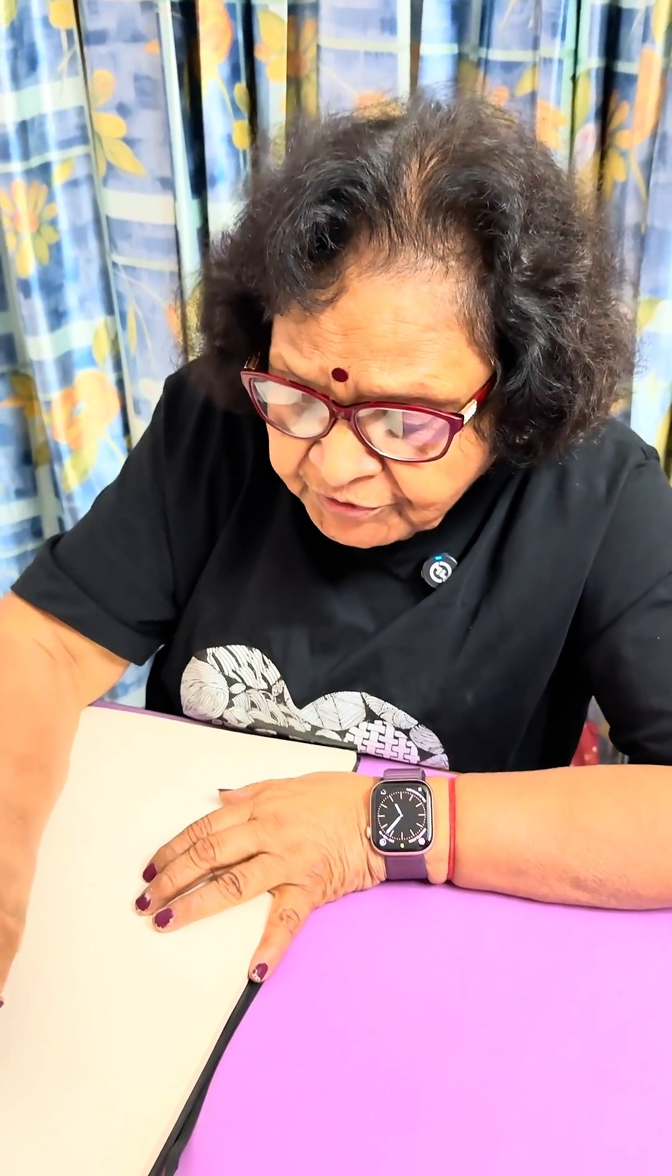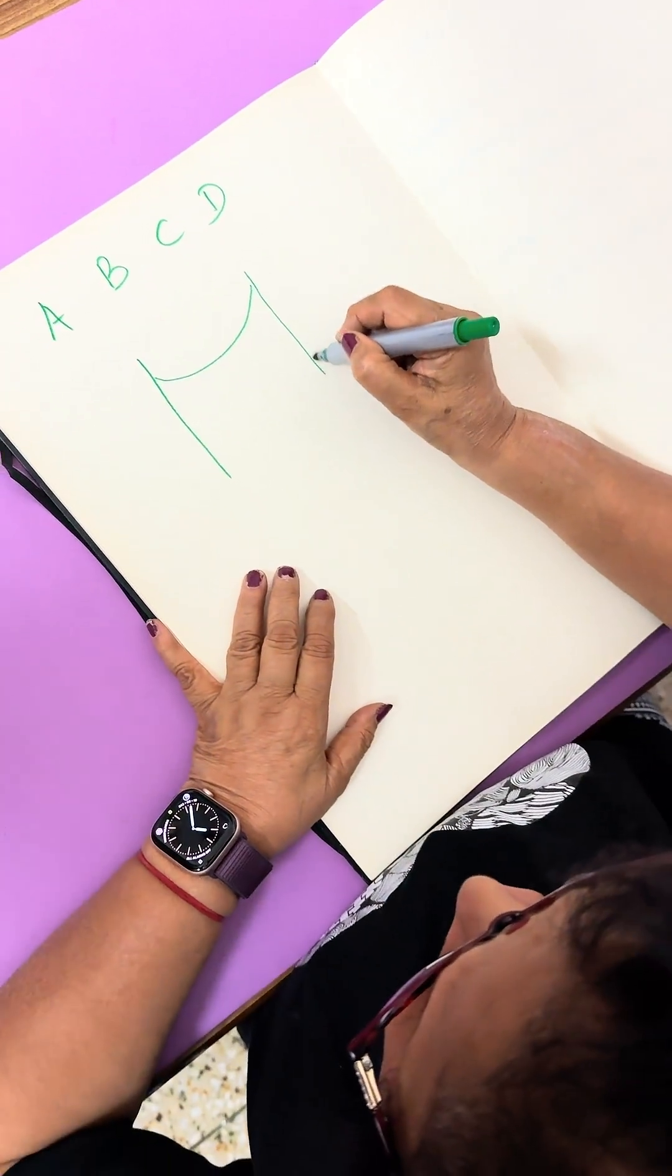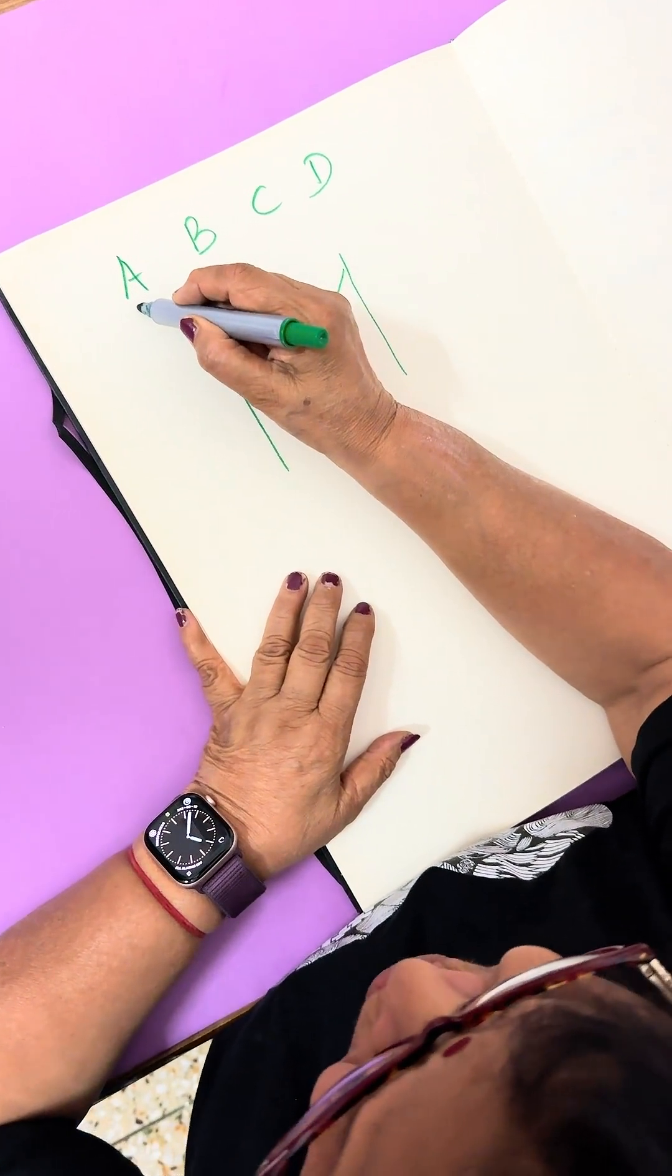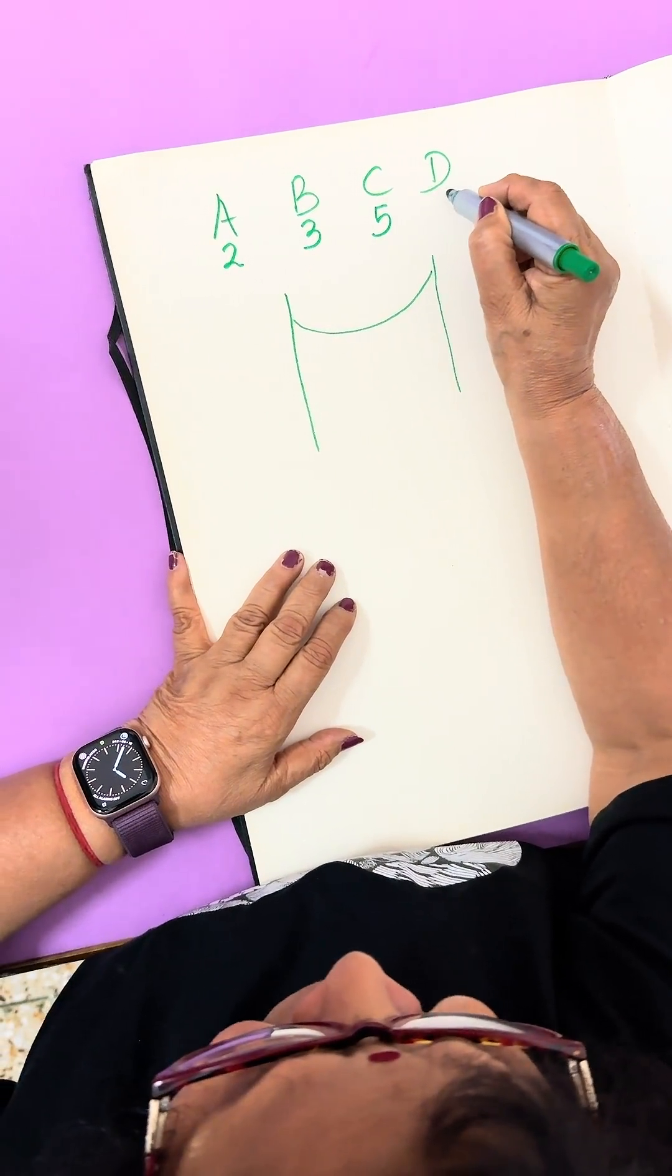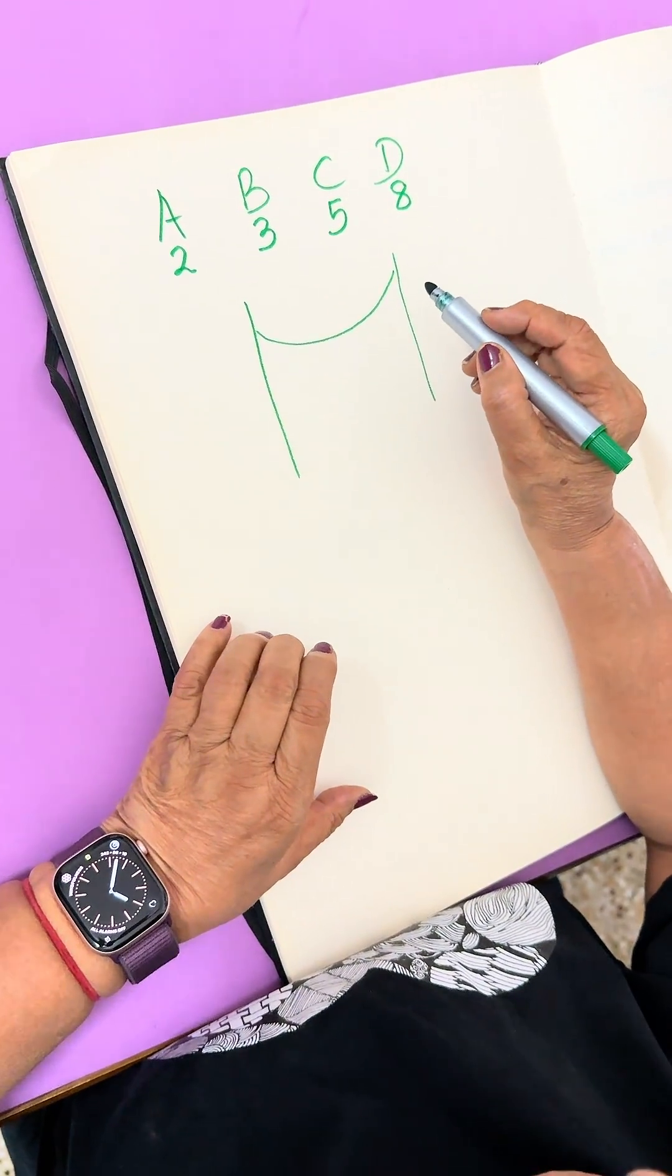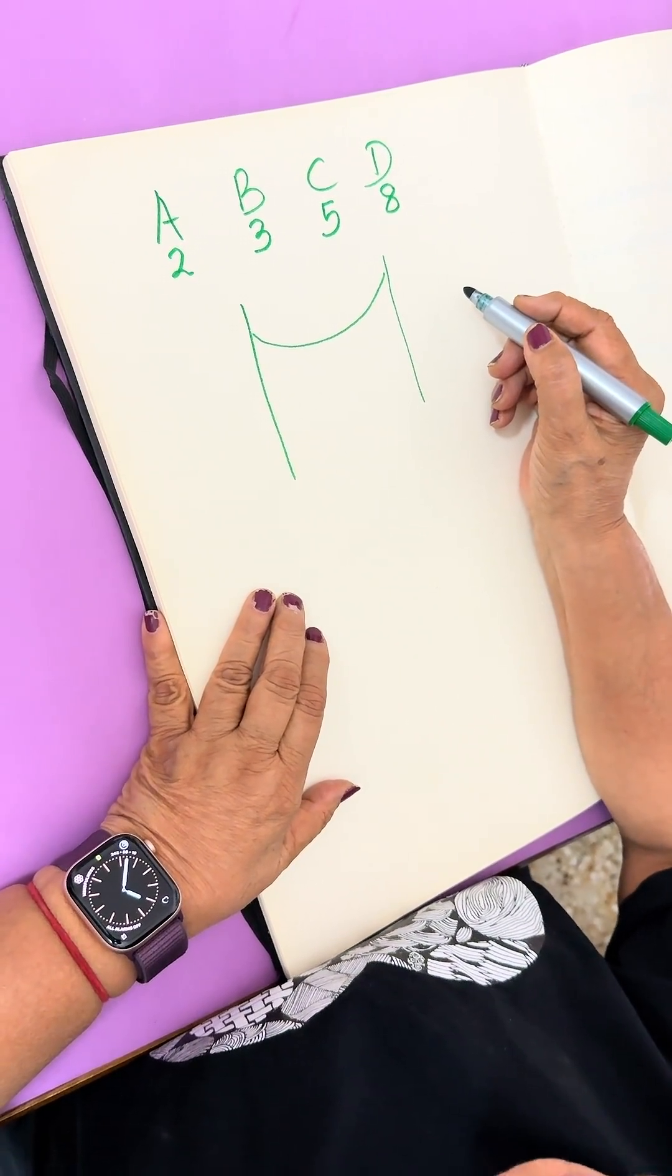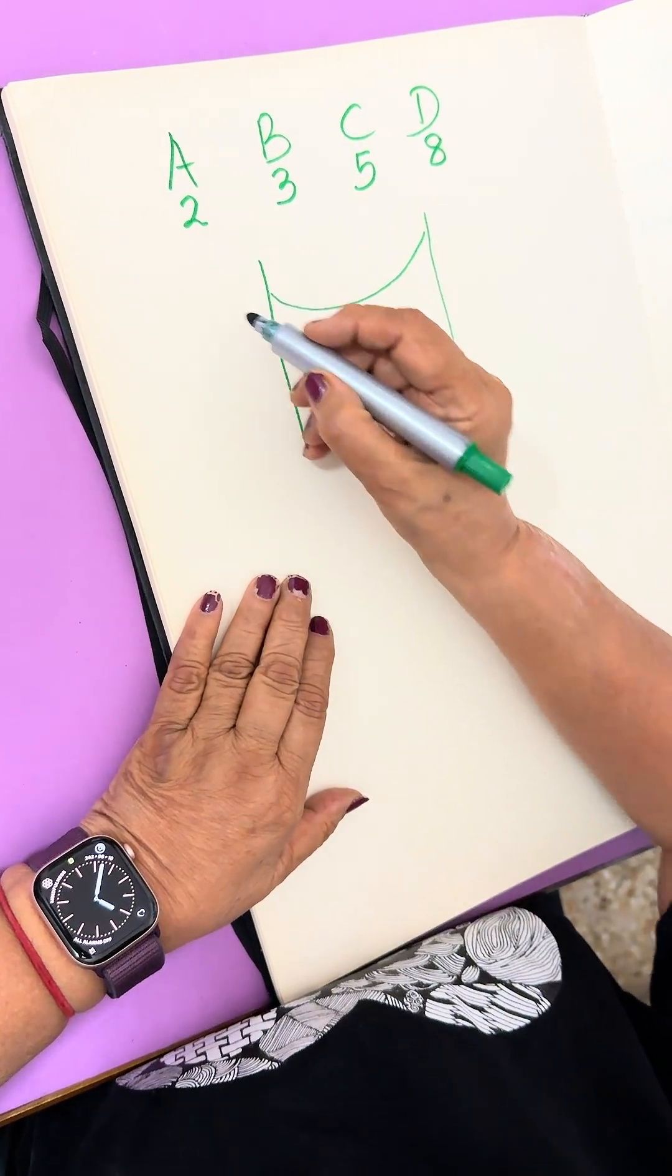Four friends A, B, C, D want to cross a bridge that can take only two people at a time. A takes 2 minutes to cross, B takes 3 minutes, C takes 5 minutes, and D takes 8 minutes. When crossing together, they move at the slower person's speed. They have only one torch, so only two people can cross at once. How will they be able to cross the bridge from this side to this side?